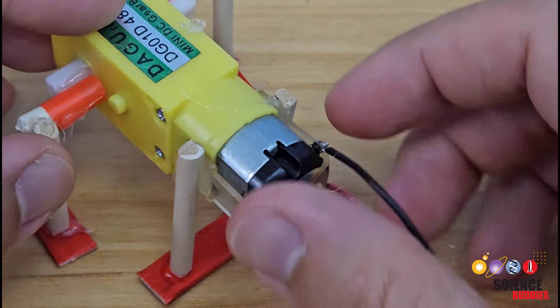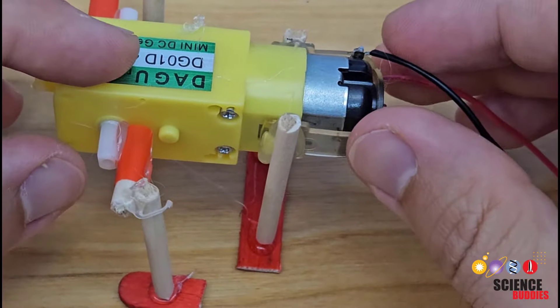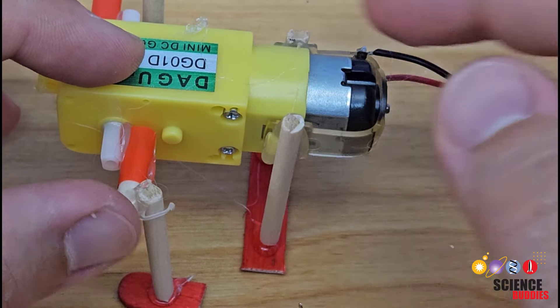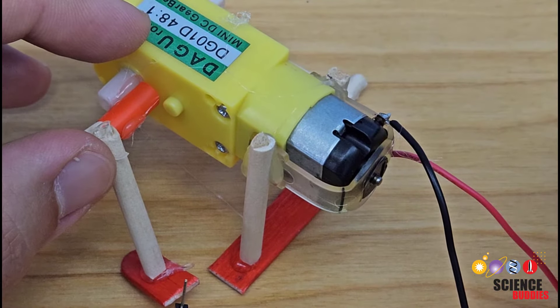Next, you'll want to build a support for the back of the robot to keep the motor parallel to the ground. You can see I've done that here with two more pieces of dowel and a piece of the popsicle stick.